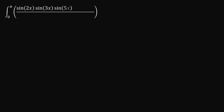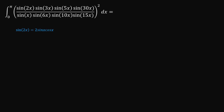The first step in solving this would be expanding some of the terms. Looking at this integrand, I would expand sine 2x into 2 sine x cosine x, sine 6x into 2 sine 3x cosine 3x, sine 10x into 2 sine 5x cosine 5x, and sine 30x into 2 sine 15x cosine 15x.